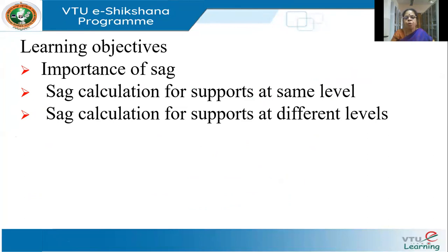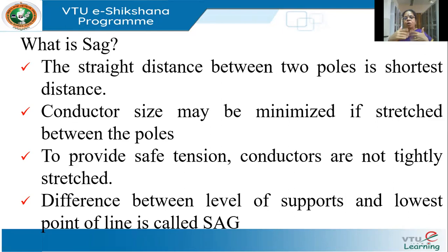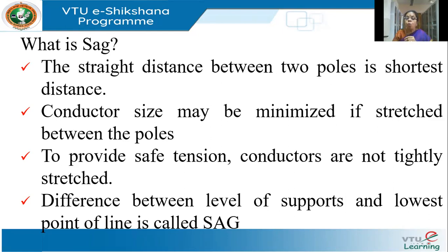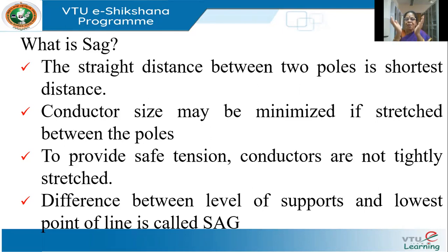In my last session I told you about supports — supports are primarily the poles or the towers. The conductor is stretched between the supports; you would have seen two poles and a conductor running between them. Now the issue is: what if I stretch it very tightly? The string is likely to snap because of excessive tension. Therefore, I don't stretch it very tightly — I give a slight laxity, and because of this, the conductor will sag, meaning it will come down because of its weight.